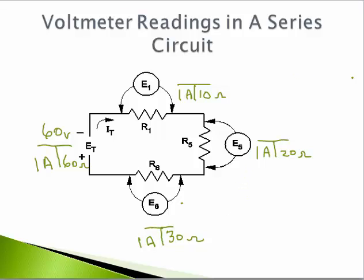Now I have two numbers at those T's, and I can figure out the value of the voltage at each resistor. So again, using Ohm's law, E equals I times R, 1 times 10 here will give me 10 volts, 1 times 20 here will give me 20 volts, and 1 times 30 gives me 30 volts.